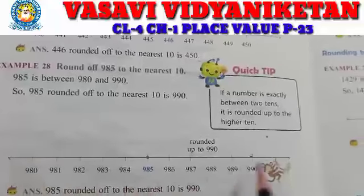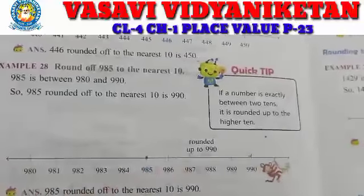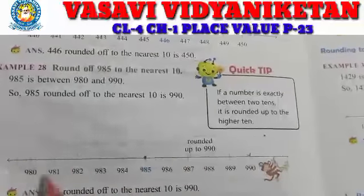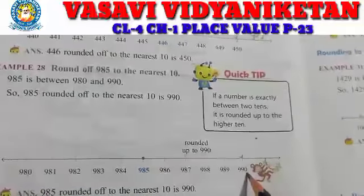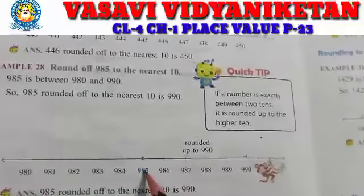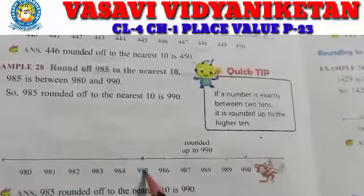See, here a number line is given — from 980 to 990. As I explained in the previous example, if the digit is 5 or more, we have to round it up to 990. If it is below 5, we have to round it down to 980.